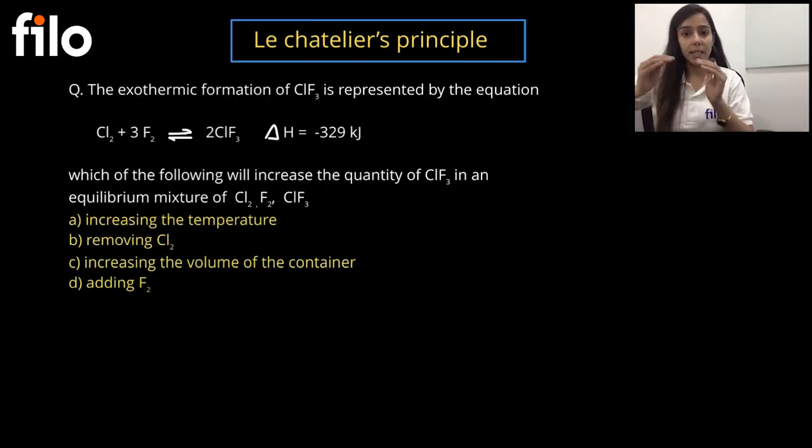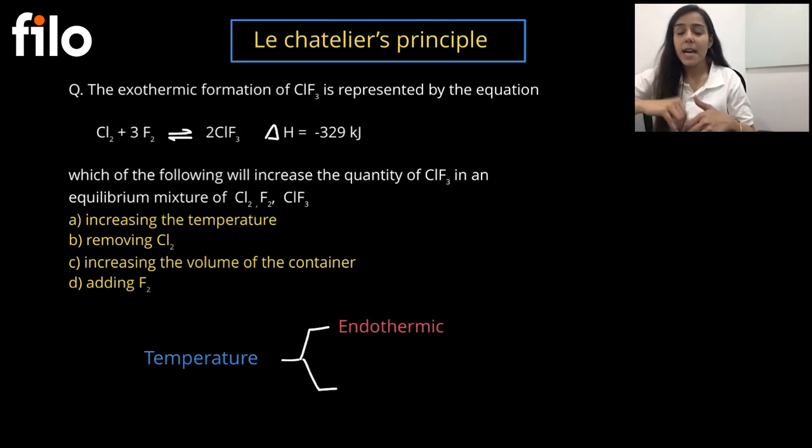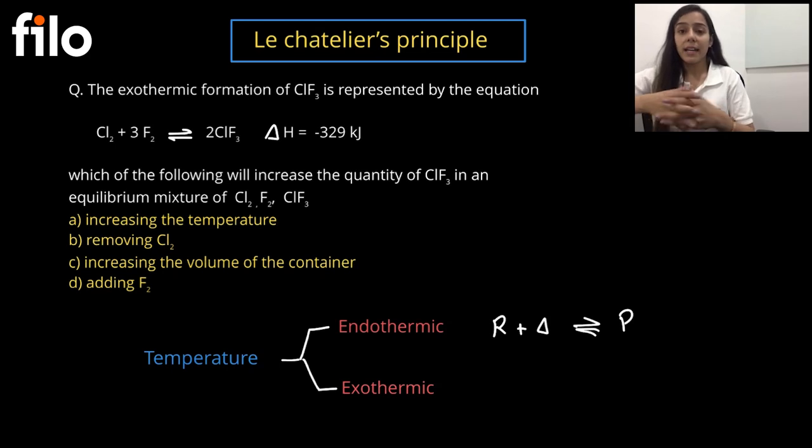Now let's look at the options. First, by increasing temperature. Temperature has two different ways depending on which reaction is endothermic or exothermic. In endothermic reaction, reactant will take some heat and produce a product. If we increase the temperature, where will the stress go? There will be a lot of heat. The heat will increase the reactant, which will become more consumed and it will become more product. If we increase the temperature, the equilibrium will shift in forward direction.